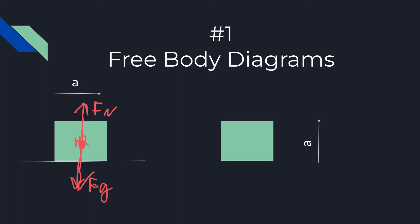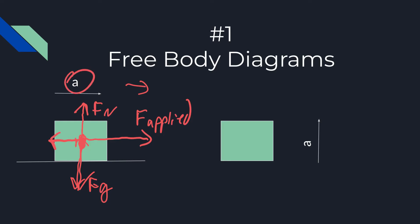If there's an acceleration to the right, there must be some net force — imagine something's pushing on the object, like an applied force. And if there is friction, then there must be a force to the left opposing that. Since there's an acceleration to the right, the friction force should be smaller than the applied force.